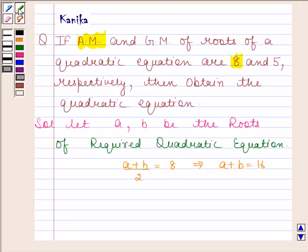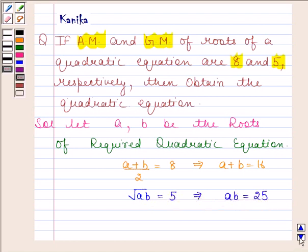It is also given in the question that geometric mean of roots of quadratic equation is 5. That means square root of AB is equal to 5, and this implies AB is equal to 25.